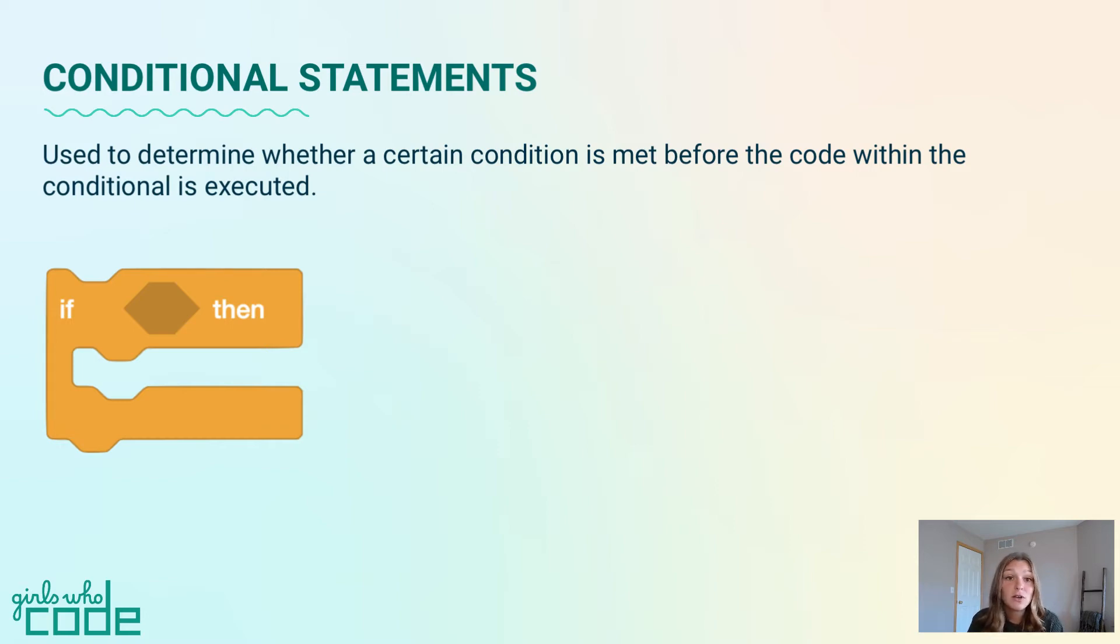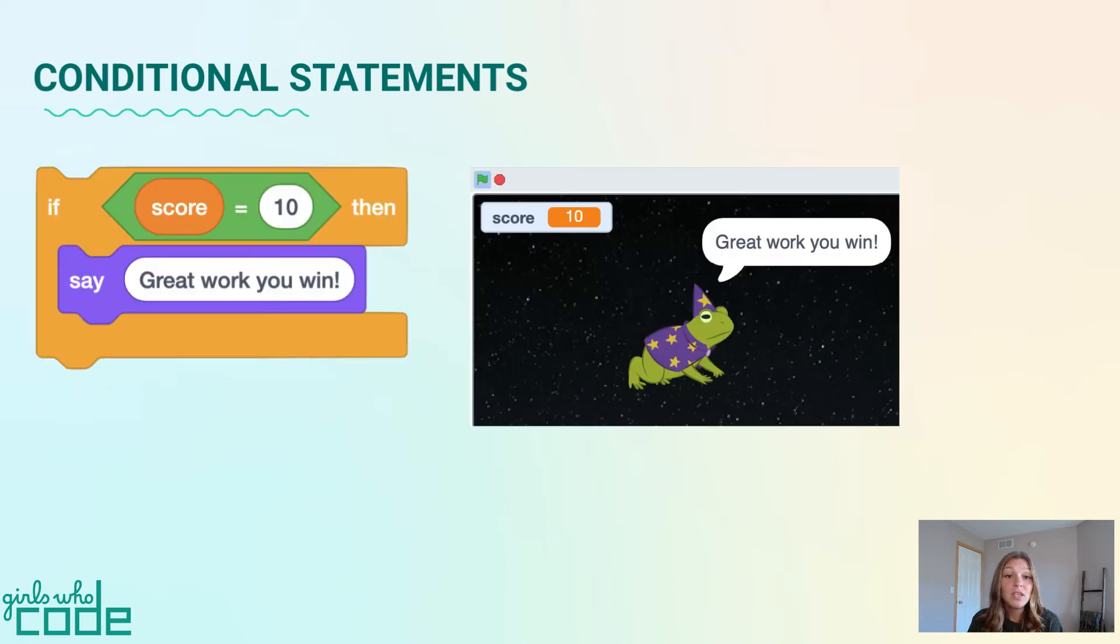A conditional is used to determine whether a certain condition is met before the code within the conditional is executed. Let's look at an example related to our game. If the score of the game is equal to 10, then the code beneath the if statement will run. If the score is not equal to 10, then the code will move past the conditional and start running the code after the statement.